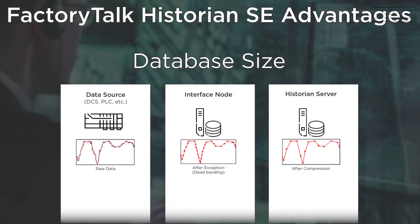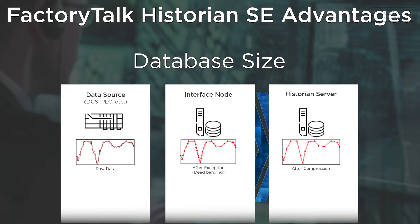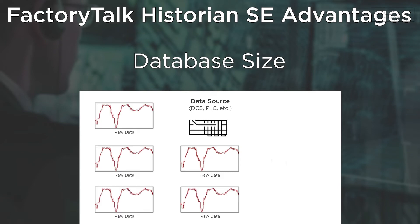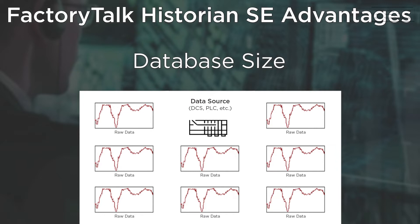Database size. One of the biggest advantages of the Historian SE is the way in which it compresses the data. It brings the data in from the controller, looks at those data values, and determines whether to actually store that value or not. After all, why would you store a data point that is not changing? Relational databases do not make that distinction — they store the data whether it's changing or not. The problem with that is you're collecting and storing data, consuming resources that aren't necessarily going to make a difference when you bring back that information to do analytics against it.